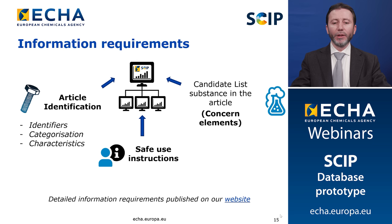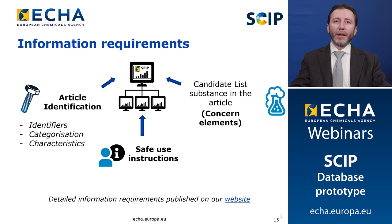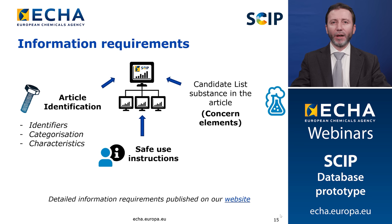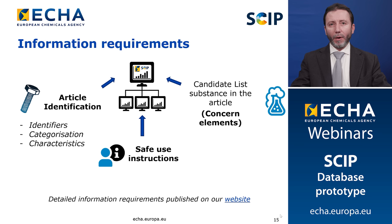All this information should already be communicated under the communication obligation under REACH, specifically Article 33.1 of REACH. The identification of the article is also information already provided together with the article — for example, in labels, catalogues or technical specifications.